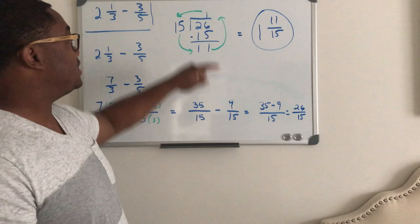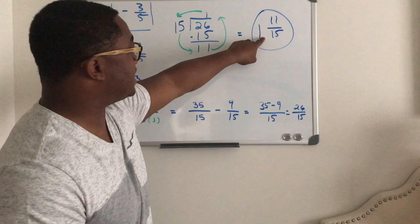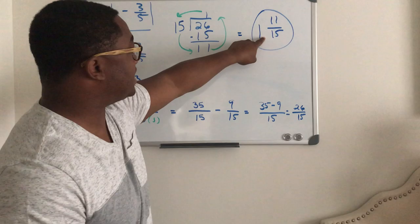And so now we have this problem, and it's simplified, except we need to put it in mixed number form. So as you can see, I drew some arrows. What your quotient is, you bring it out as a whole number. What your divisor is, you bring it out as a denominator. And what your remainder is, you bring it out as a numerator.